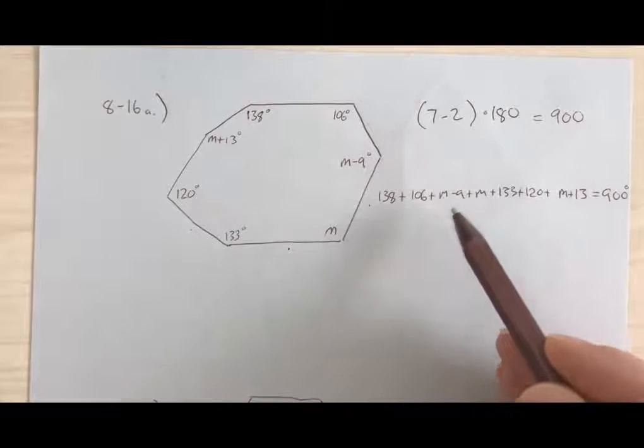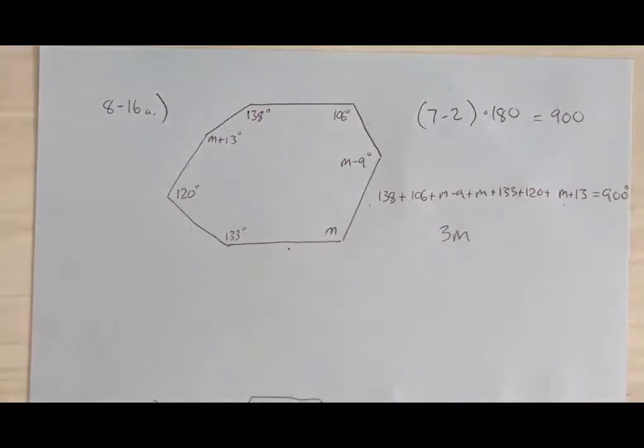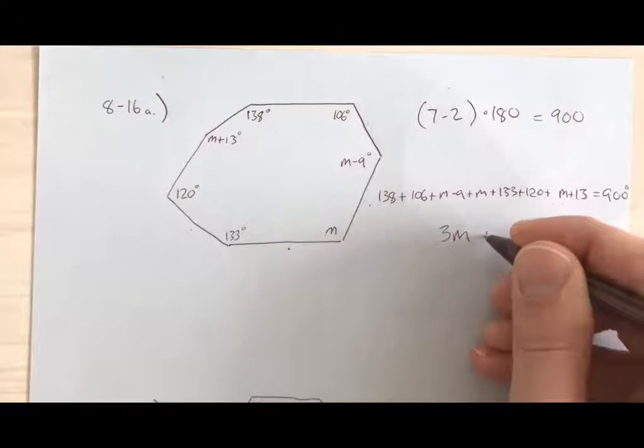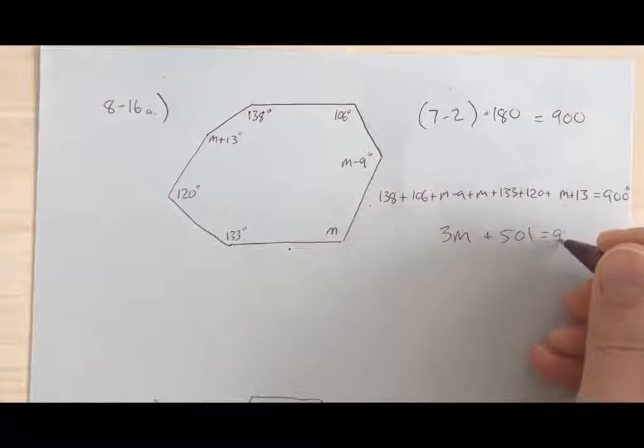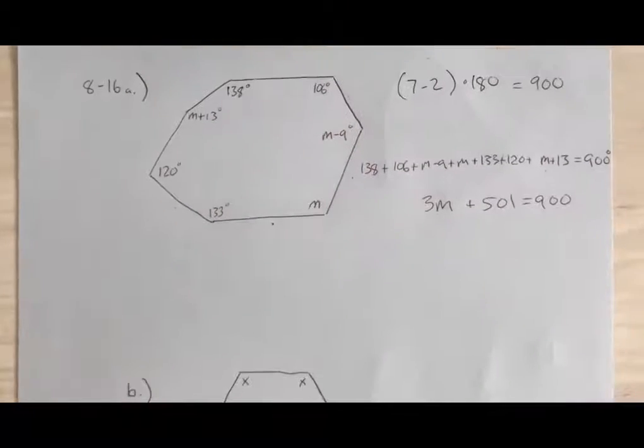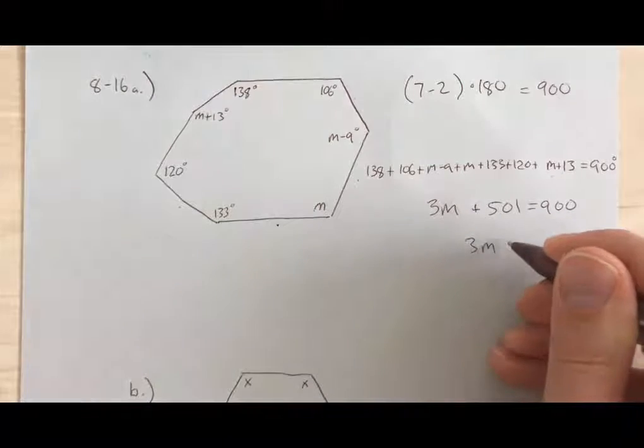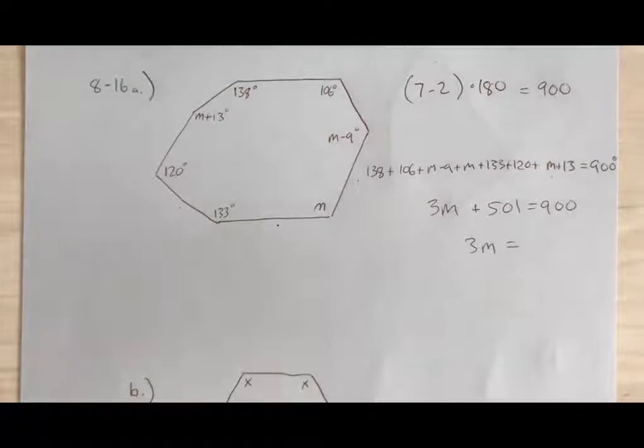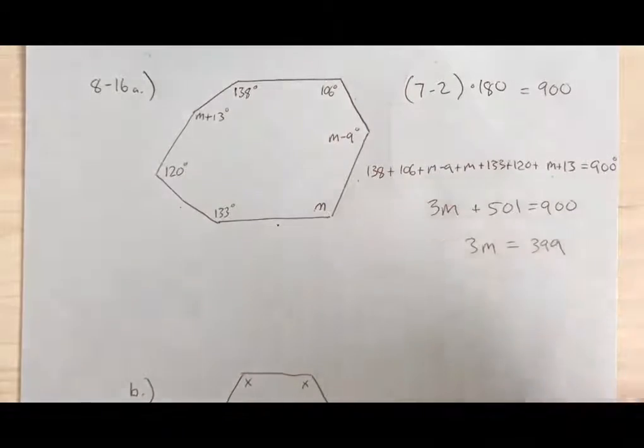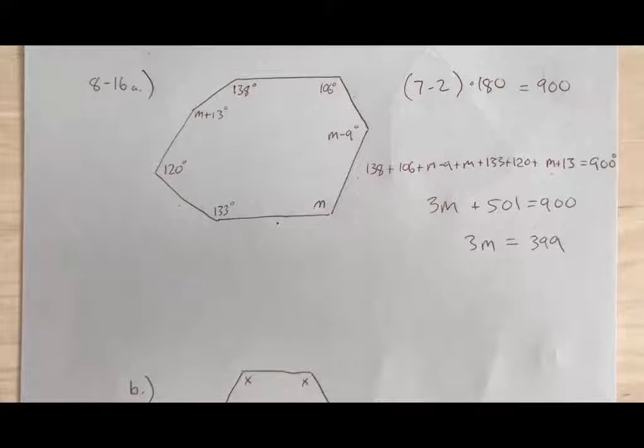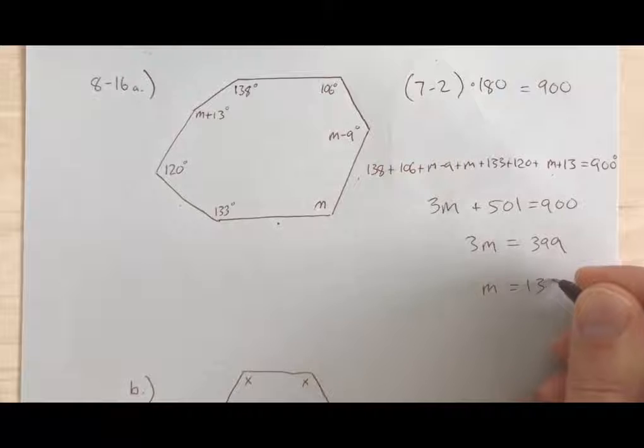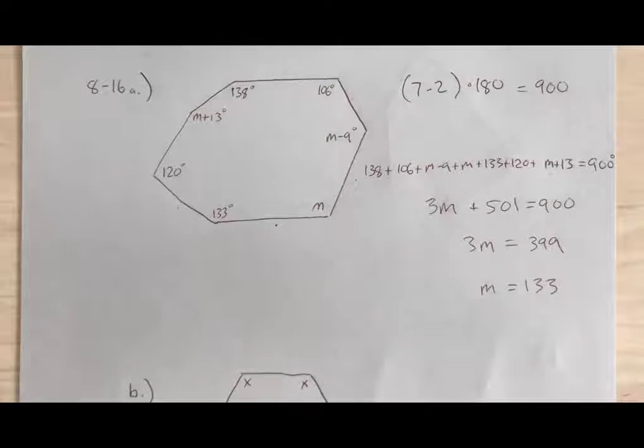I got an M plus an M plus an M, so that's 3M. And then I'm going to add all the numbers together: 138 plus 106 minus 9 plus 133 plus 120 plus 13, and I got 501 equals 900. Now I can solve that equation. Subtract 501 from both sides: 900 minus 501 gives me 399. Divide by 3 to get M by itself, and M equals 133.